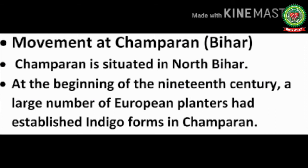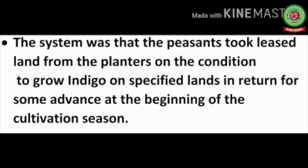Champaran is situated in north Bihar. At the beginning of the 19th century, a large number of European planters had established indigo farms there. The system was that peasants took leased land from the planters on the condition to grow indigo on specified lands in return for some advance at the beginning of the cultivation season. Indigo is a deep blue color dye used in the textile industry in England for dyeing purposes.